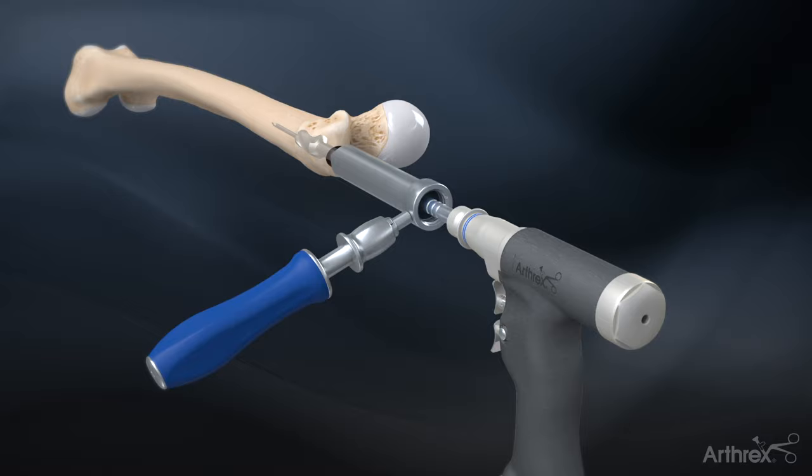The depth is determined by the first indentation of the reamer lining up with the top of the soft tissue protector.